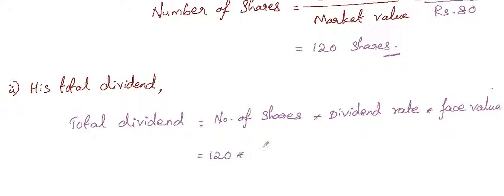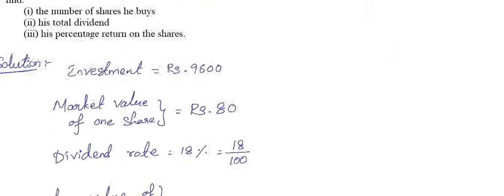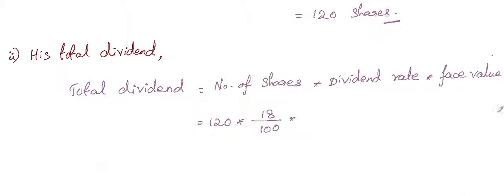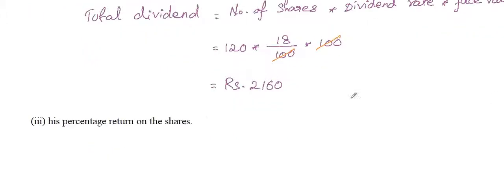Which is 120 times 18 divided by 100, and the face value is Rs. 100. So this hundred-hundred cancels out. We'll come up with 120 times 18, which is 2,160. So the total dividend is 2,160.